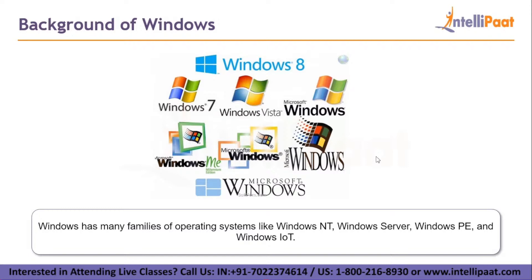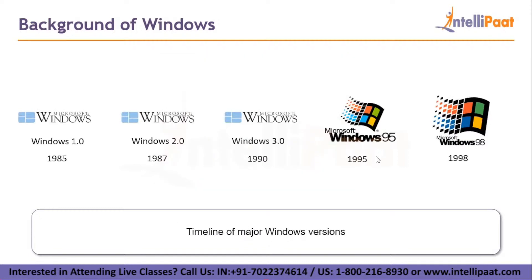Let us take a look at the timeline of Windows versions. Windows 1.0 was released in 1985. Windows 1.0 was just an extension of the MS-DOS operating system. It did not achieve any real success. It had simple applications like calculator, notepad, paint, clipboard viewer, etc.